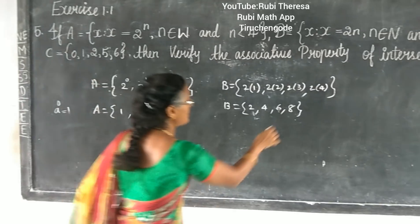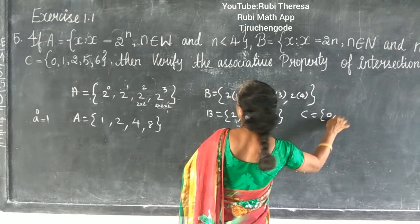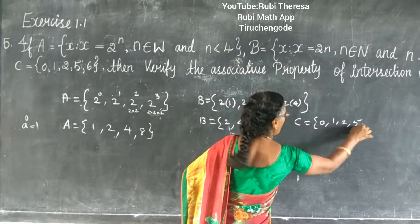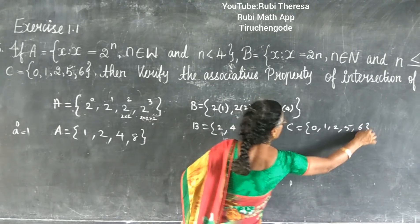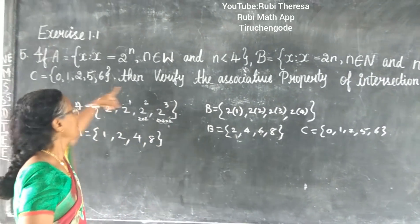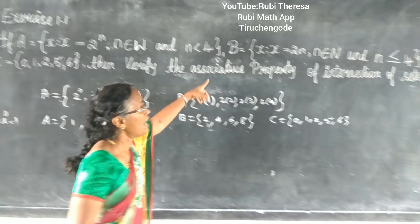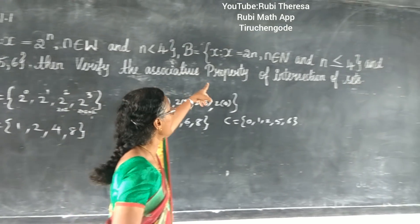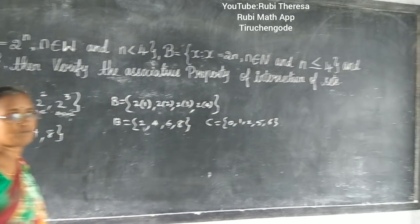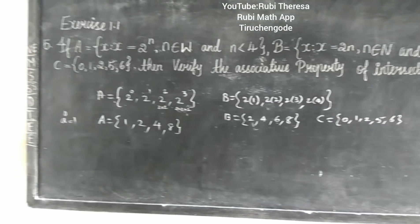What is C? It is given here: C equals {0, 1, 2, 5, 6}. Now you have A, B, and C. Then verify the associative property of intersection.